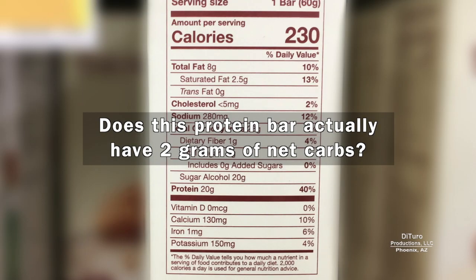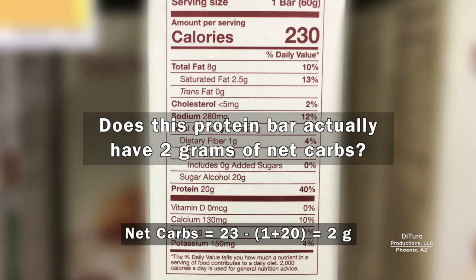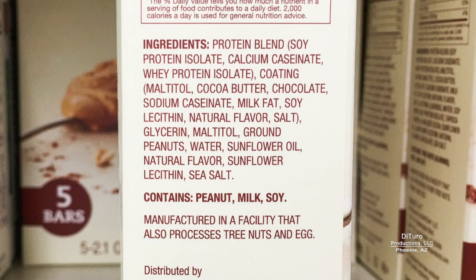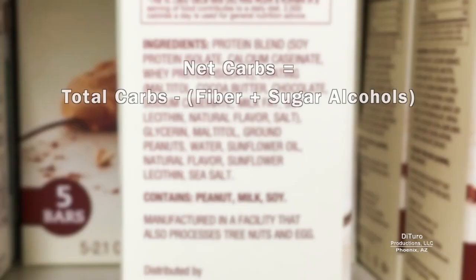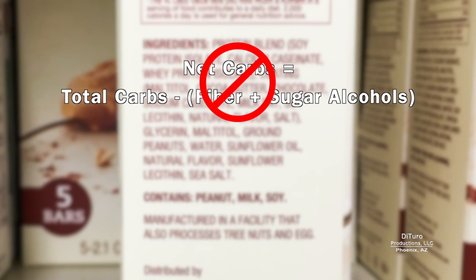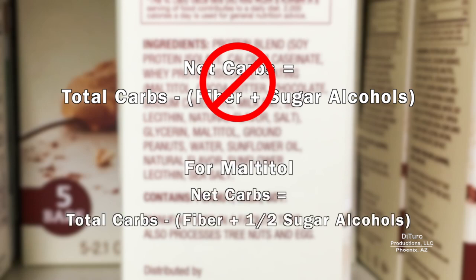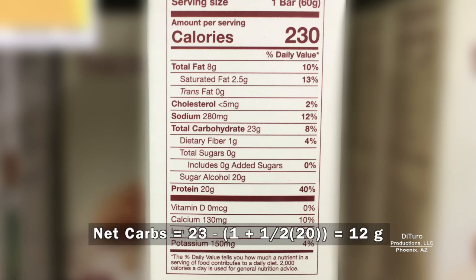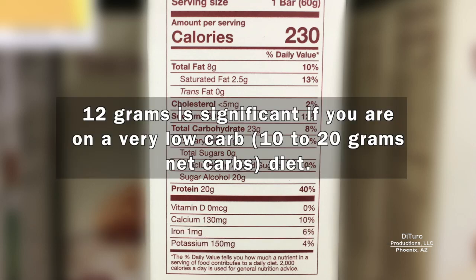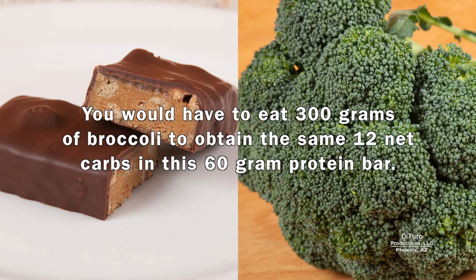Going back to our protein bar, does it actually have 2 grams of net carbs? According to the ingredients list, the only sugar alcohol is maltitol, and the glycemic index for maltitol is about 50% that of table sugar. Due to its GI, the simple equation for net carbs doesn't apply. For foods made with only maltitol, you need to exclude one half of the sugar alcohol. Instead of 2 grams of net carbs per bar, you're actually getting about 12 grams of net carbs. That's significant if you are on a very low-carb diet — you'd have to eat 300 grams of broccoli to obtain the same 12 net carbs in this 60-gram protein bar.